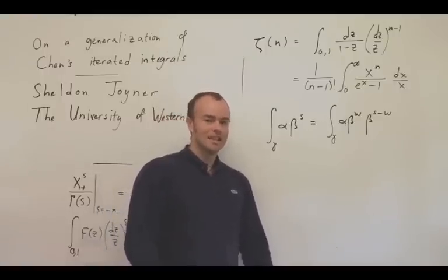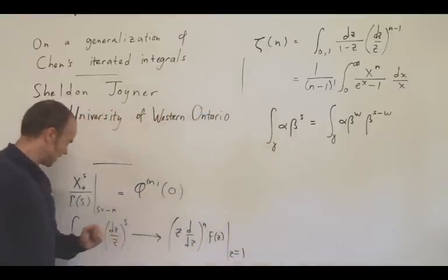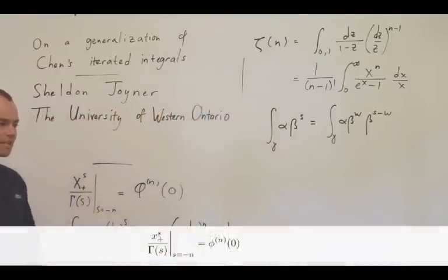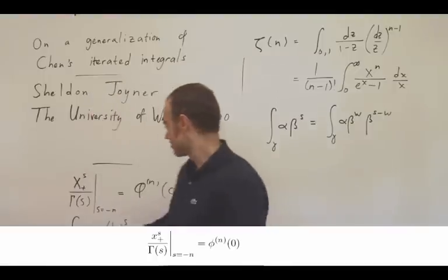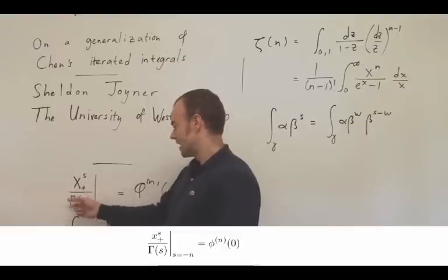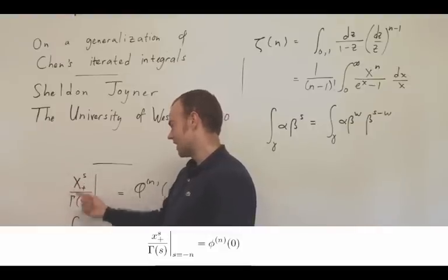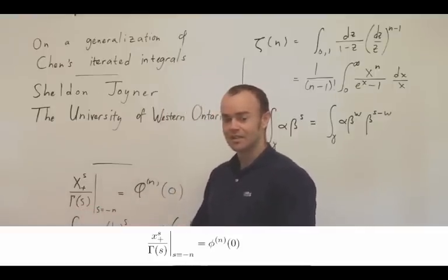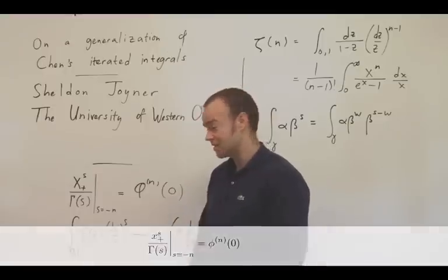Another application is the following. Gelfand and Shilov in the theory of distributions have a very nice theorem which expresses that this very special normalized distribution, x plus to the s over gamma s, admits an analytic continuation which at negative integer parameters coincides with the nth derivative Dirac measure.